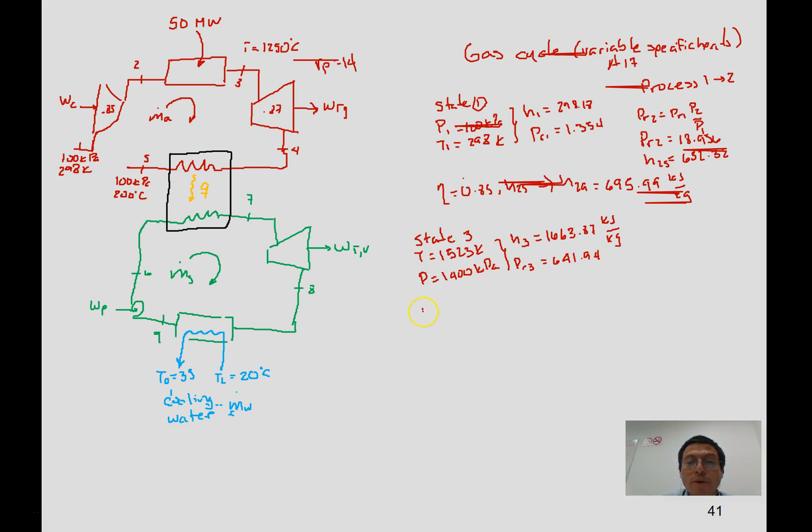From the tables we have h3 and PR3. Again, process 3 to 4 is isentropic, so we can get PR4.